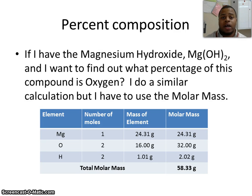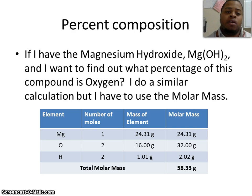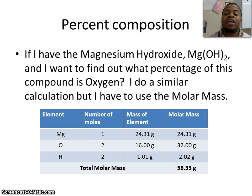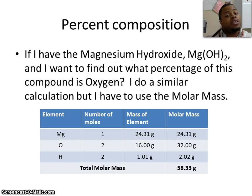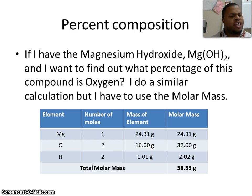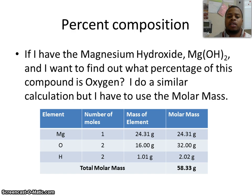If I'm looking at an overall compound, say magnesium hydroxide, we'll find out what percentage of it is actually oxygen. I'm going to do a very similar type of calculation, but instead now I have to utilize the molar mass. The molar mass, which we saw in the last video — if you need to review that, there's also practice on Noodles. Just in case you need a little refresher on molar mass, go ahead and take a look at those.